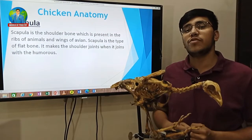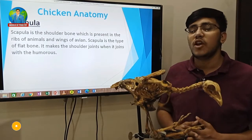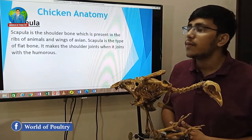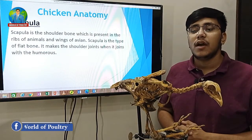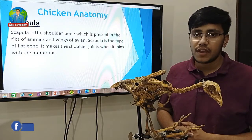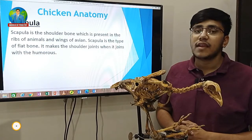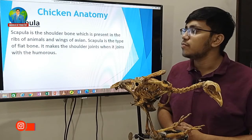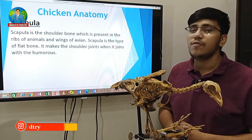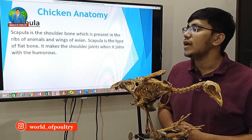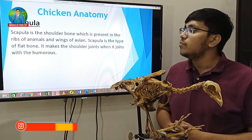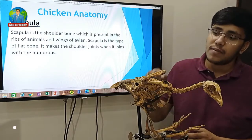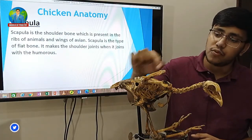Hello everyone, you are watching World of Culture YouTube channel. The scapula is the shoulder bone which is present in the ribs of animals and wings of avian. The scapula is a type of flat bone. It makes the shoulder joint when it joins with the humerus.